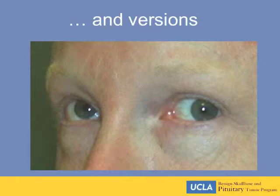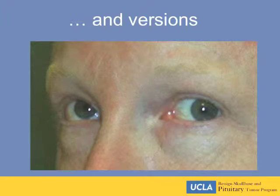In this particular case of a gentleman with a right fourth cranial nerve palsy, you can see that in the adducted position, the superior oblique isn't able to bring the eye down. So the adducting eye has an upward position in the presence of fourth cranial nerve weakness.